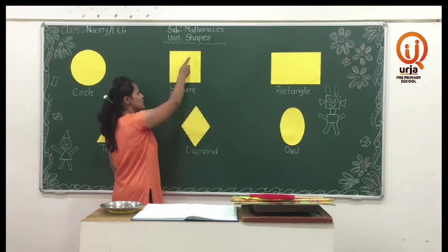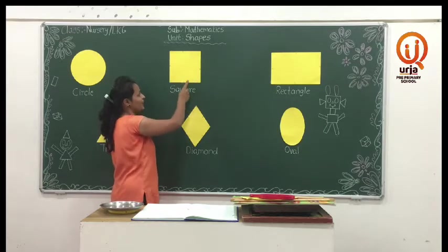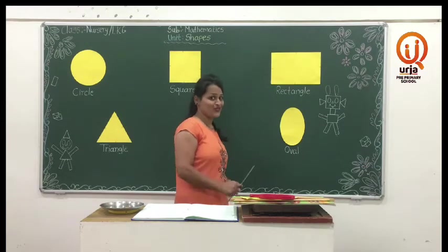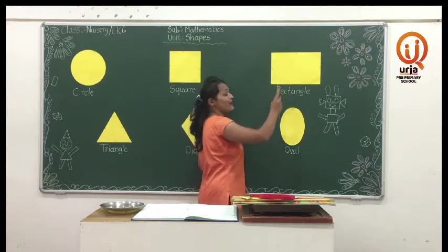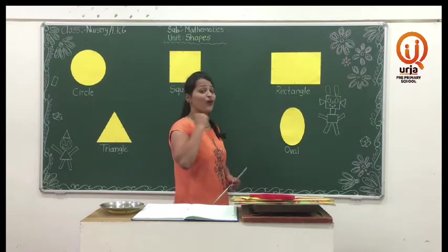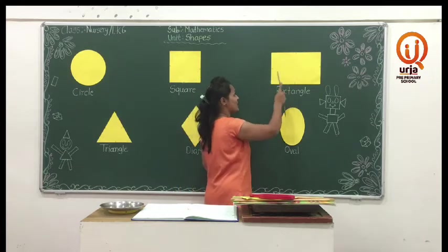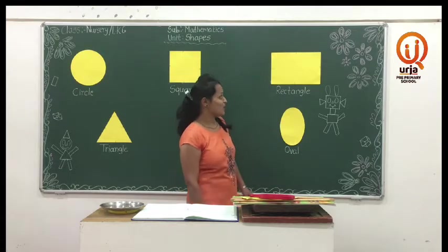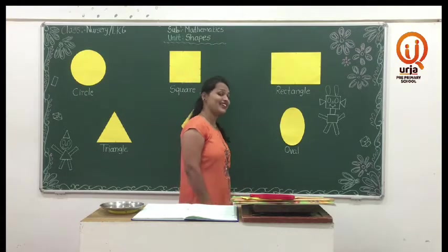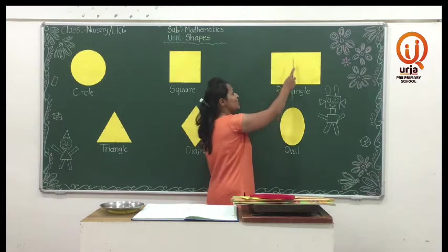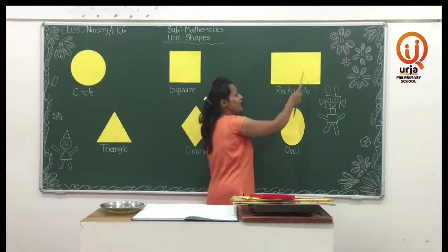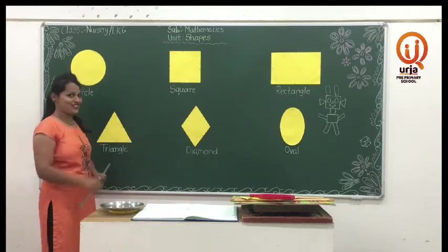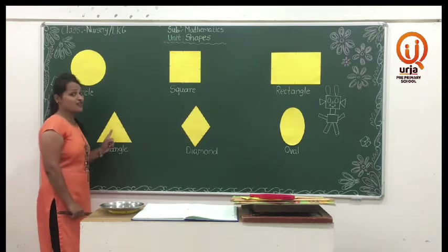One, two, three, four. I am a rectangle, I have four sides. Opposite sides are equal. Opposite sides are equal. One, two, three, four. I am a triangle, I have three sides.